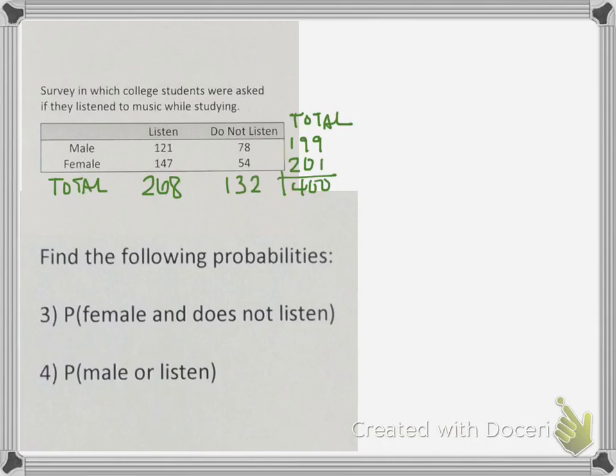So if we look at another set, we might have something that's a little more complicated. Question 3 says find the probability that the student is female and does not listen to music. If we're looking at an and situation, we're looking for some place where these two intersect in the chart. We're looking for female and do not listen, which is right here. So where they intersect is going to be 54 out of everybody in the chart, which is 400.